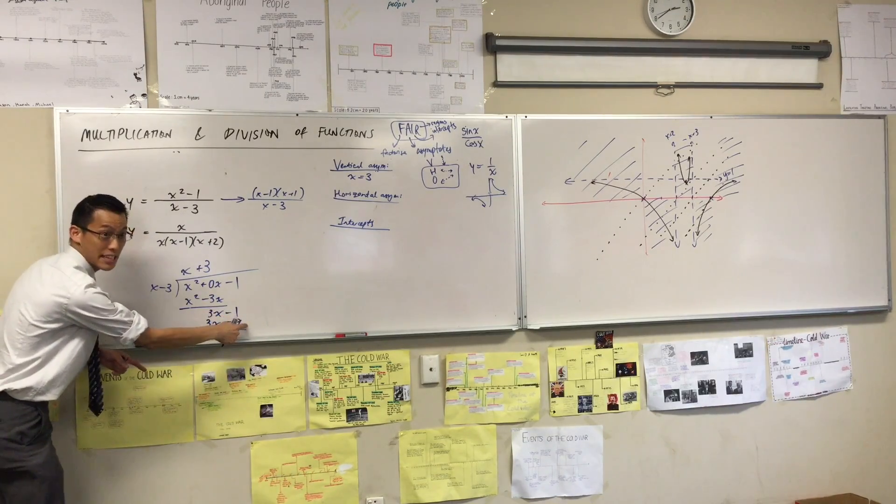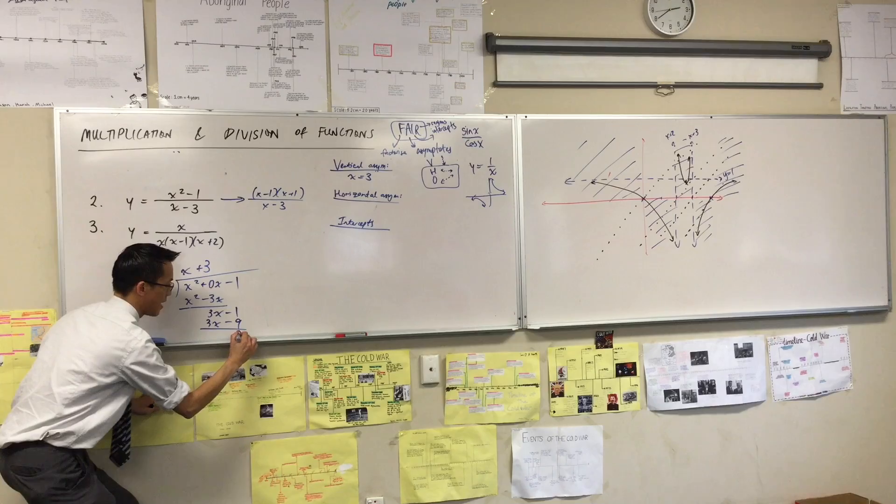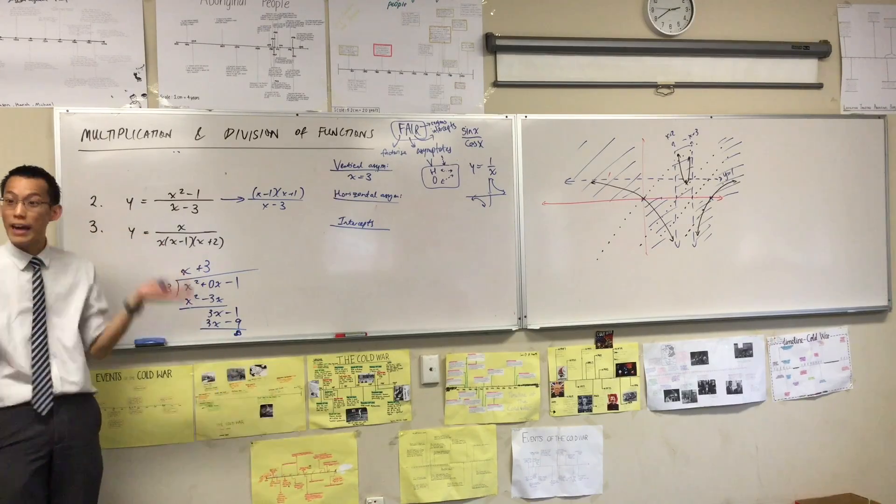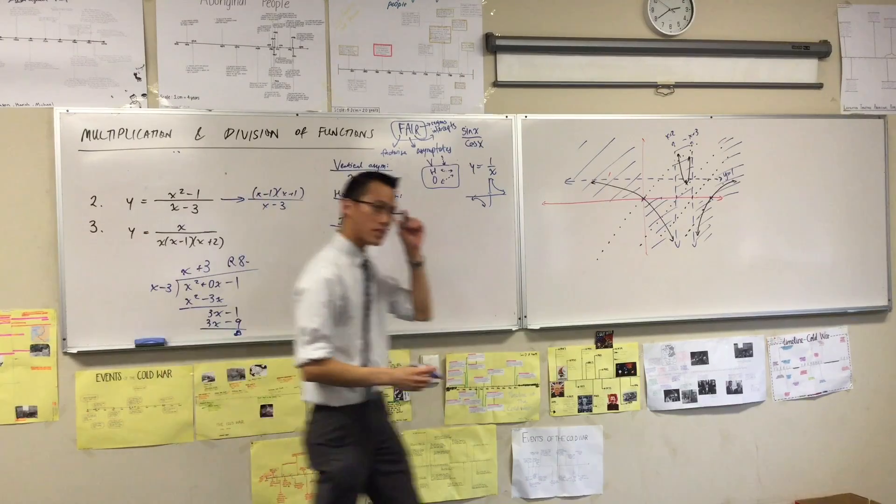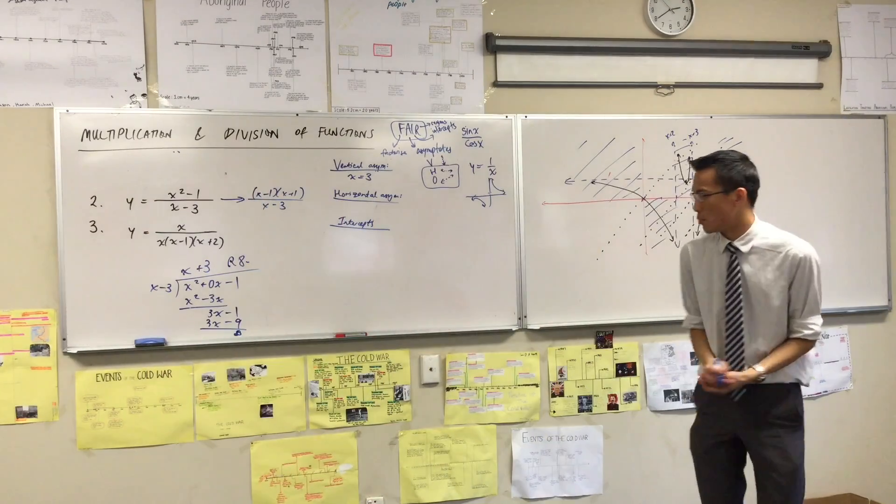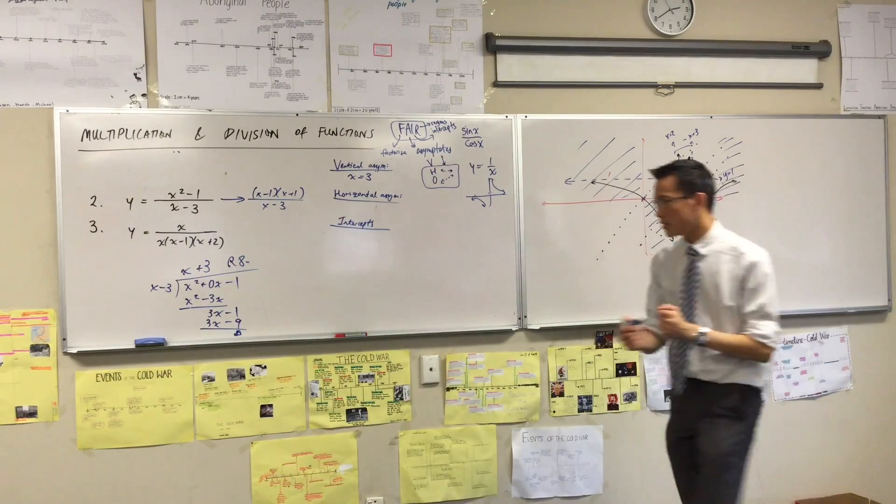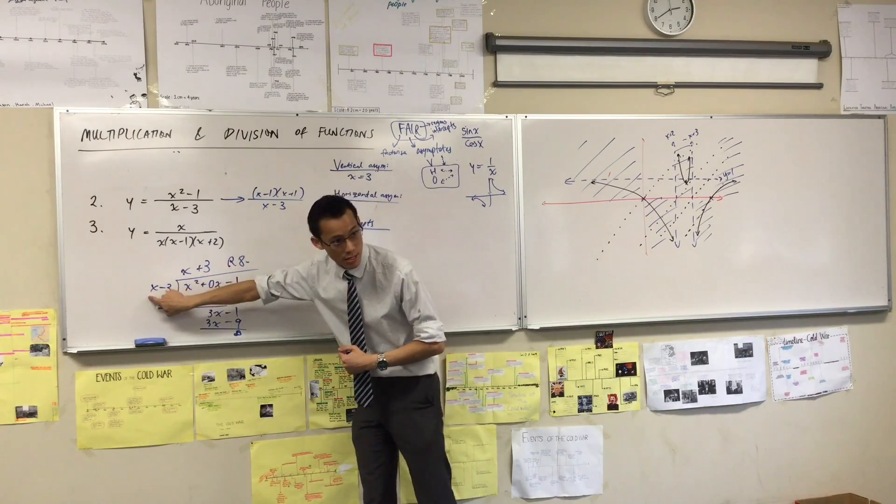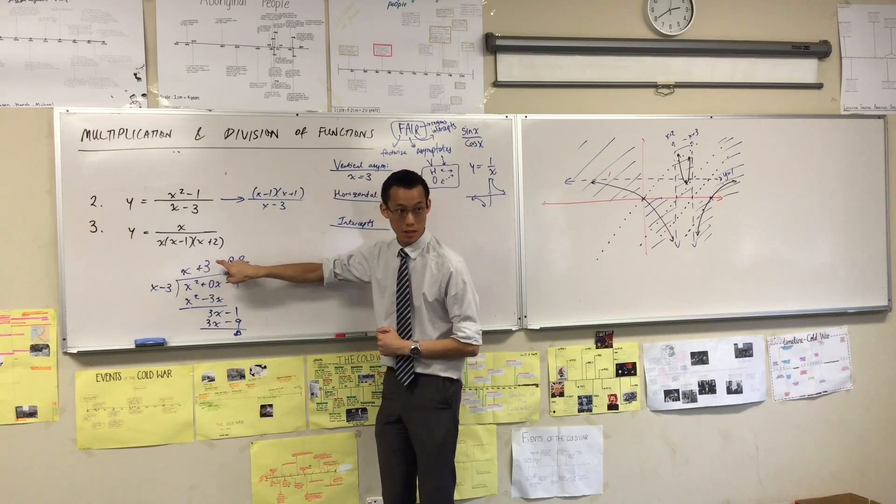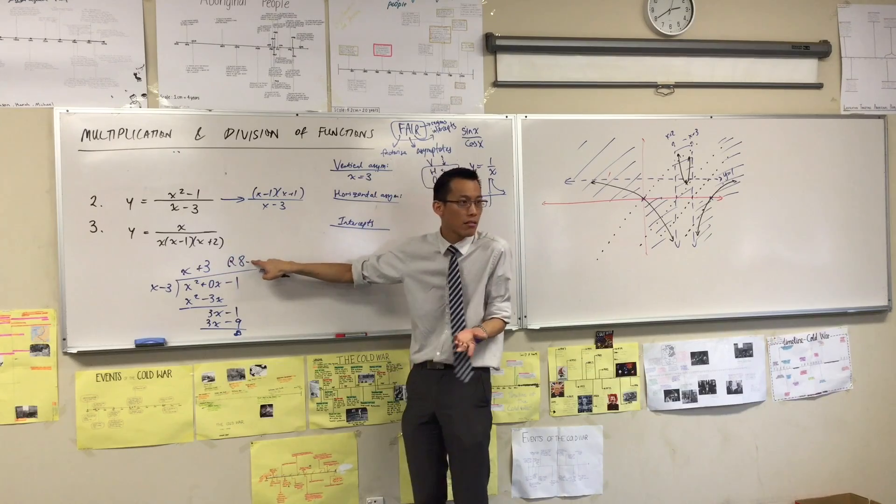Minus 1 take away this gives you 8. And then at this point you say I can't fit any more x's in there. So what does this 8 mean? It's the remainder. Now what's the point of doing this? What's the point of polynomial division? What it means is you can restate the original polynomial as this times this plus that.